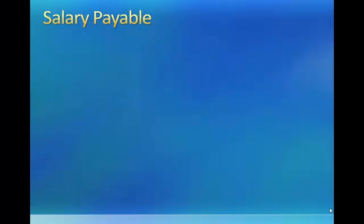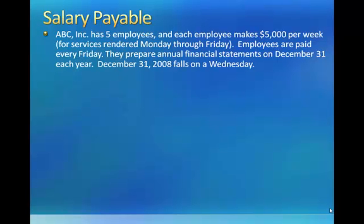The second type of adjusting entry that accrues an unpaid expense is salaries payable. In this example, ABC Inc. has 5 employees. Each employee makes $5,000 per week for services rendered Monday through Friday, so a total of $25,000 is earned each week. Employees are paid every Friday, so the company's payroll of $25,000 is paid on checks cut every Friday. They prepare annual financial statements on December 31st each year.